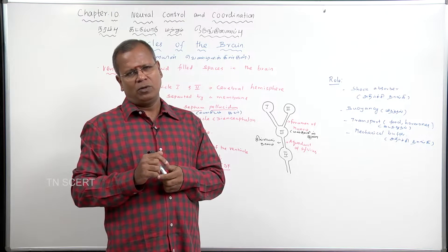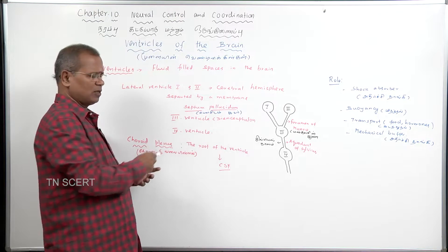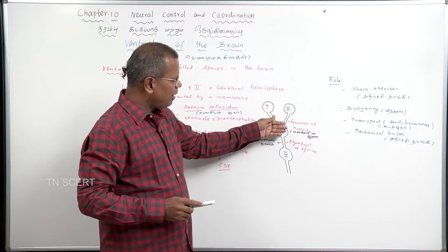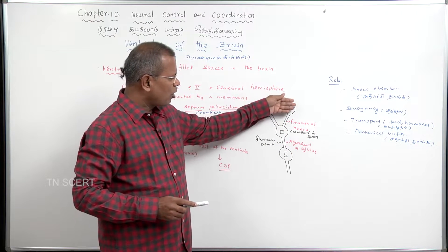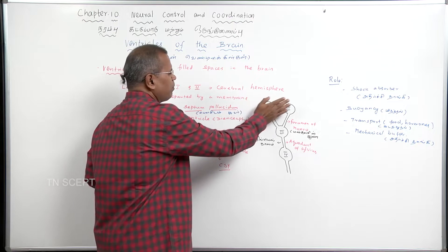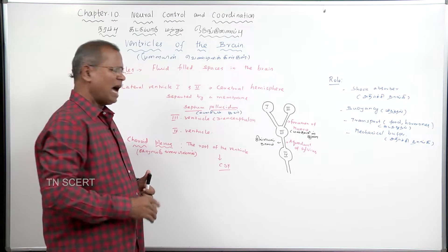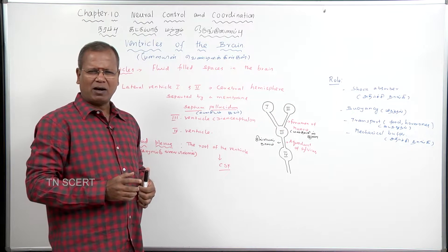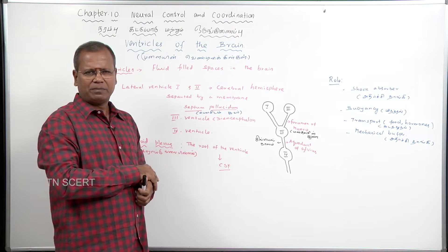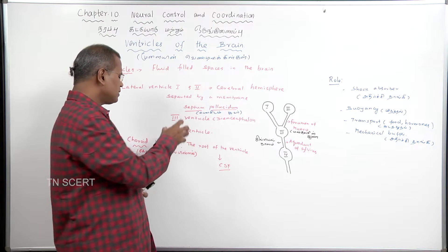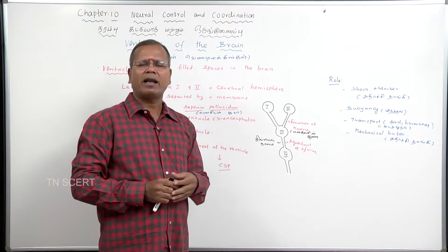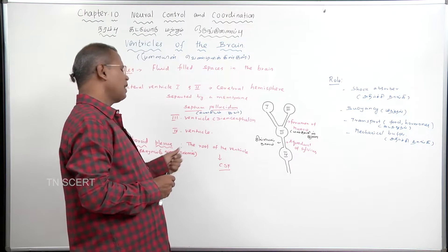What is choroid plexus? The roof of the ventricle has blood capillaries called choroid plexus. This choroid plexus secretes cerebrospinal fluid.